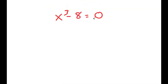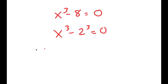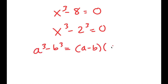So I'm going to rewrite the equation as x to the power of 3 minus 8 equals 0, and now I'm going to rewrite 8 as 2 to the power of 3. So I get x to the power of 3 minus 2 to the power of 3 is equal to 0. Then I'm going to use the formula a to the power of 3 minus b to the power of 3 is equal to a minus b times a squared plus ab plus b squared.